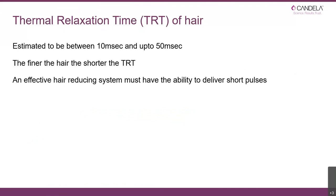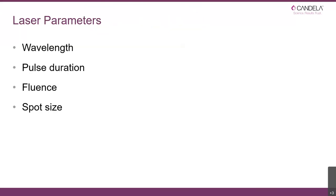Various studies come up with different numbers, but the estimate of the TRT of hair is between 10 and 50 milliseconds. The difference in TRT time is based on the thickness of the hair — the finer the hair, the shorter the thermal relaxation time, because the volume of hair being heated is smaller with thin hair than with thicker hair. So an effective hair reducing system must have the ability to deliver short pulses.